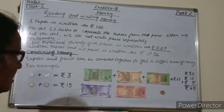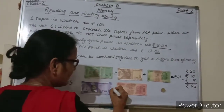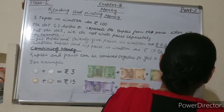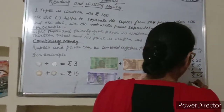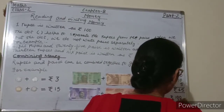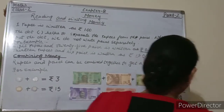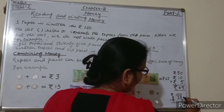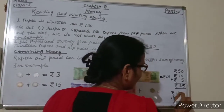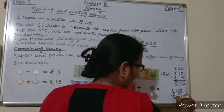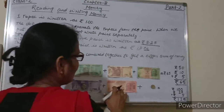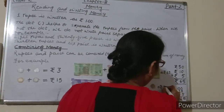Again, combine these notes and coin: 100 rupees plus 20 rupees plus 5 rupees coin. So 0 plus 0 plus 5 equals 5, 0 plus 2 equals 2, and 1. Give the rupee sign. So 100 plus 20 plus 5 is equal to rupees 125.